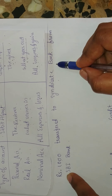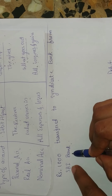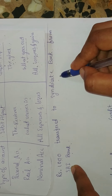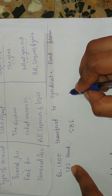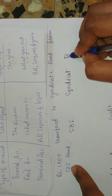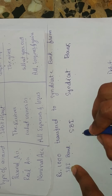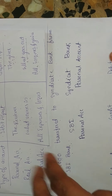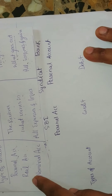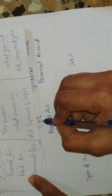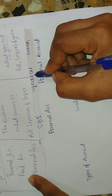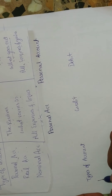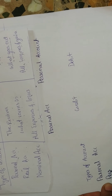The third transaction: rupees one thousand transferred to Syndicate Bank from SPI Bank. We are transferring one thousand rupees from SPI Bank to Syndicate Bank. Two banks are involved here — cash is directly transferring from one bank to another, so cash account will not come here. The two accounts are SPI Bank and Syndicate Bank. Both are bank names, so both come under personal account.